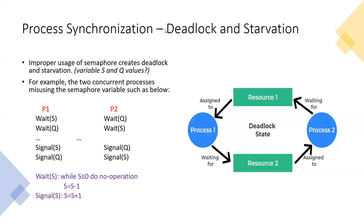We have two main semaphore variables — for example, S and Q. These are two shared semaphore variables that both processes can use. This is the particular scenario we are going to examine.